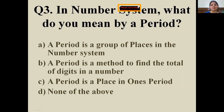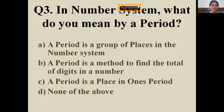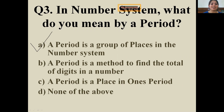Question three: in the number system, what do you mean by a period? Read down the options. A period is a group of places in the number system. In the Indian place value system we have the ones period, thousands period, and lakhs period.